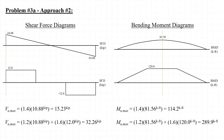Evaluating the load combinations for the bending moments, load combination number two again results in the critical value of M sub U with a factored bending moment of 290 kip-feet. Note that when applying the load combinations, we must apply them to magnitudes of shear force or bending moment at common locations along the beam for both the service dead and service live. It would not be appropriate to combine a shear force from the dead load diagram at one location with a shear force from the live load diagram at a different location.